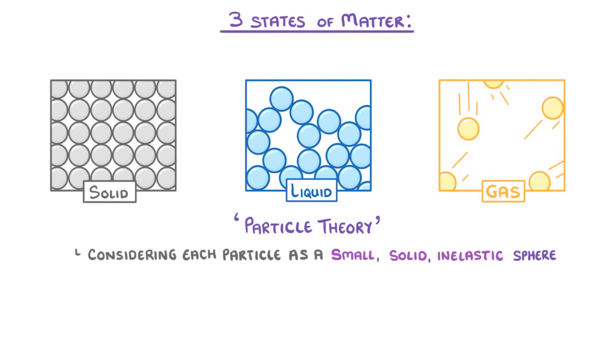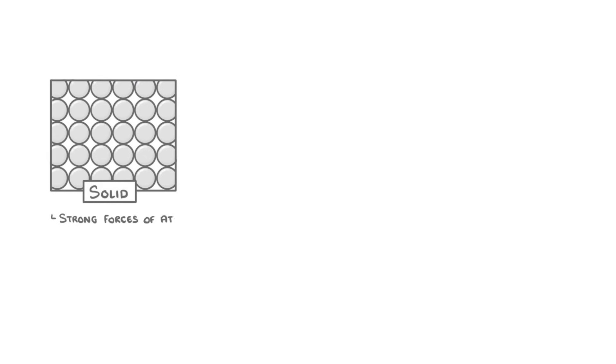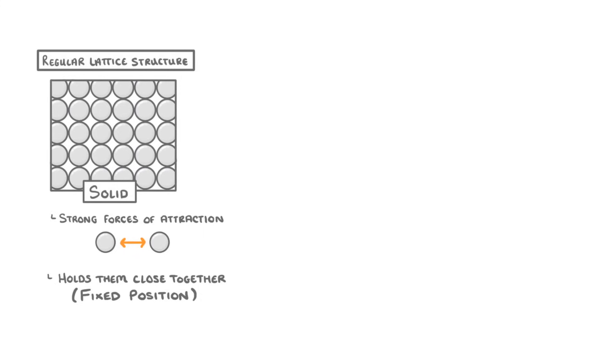In solids there are strong forces of attraction between the particles which holds them all close together in a fixed position to form a regular lattice structure. Because the particles are fixed, the overall substance keeps a definite shape and volume, so it can't flow like a liquid. The particles can vibrate in their position though, so you can imagine them constantly jostling against each other.